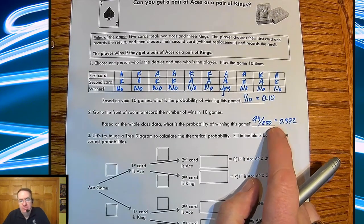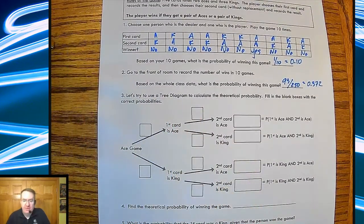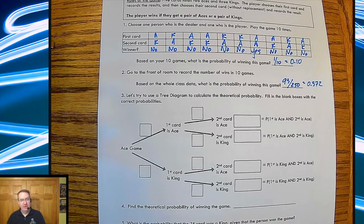Now there's something called a tree diagram to calculate the theoretical probability. So what we're going to do is we're going to go through and fill out the boxes as we go so we can kind of see how this thing works.